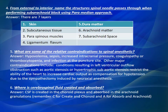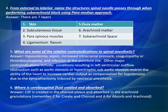Question Number 6: Where is cerebrospinal fluid created and absorbed? Answer: CSF is created in the choroid plexus and absorbed in the arachnoid granulations. Remember: C for create and choroid, and A for absorb and arachnoid.